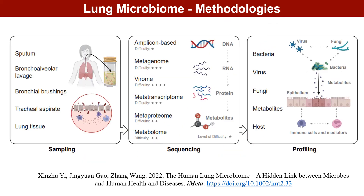Sputum, bronchoalveolar lavage, bronchoscopy brushings, and lung tissue are the routine sample types for lung microbiome studies. 16S rRNA gene and ITS-based amplicon sequencing are widely applied for characterizing the lung bacterial and fungal microbiota. To sequence the virome community, a purification and enrichment step is required to isolate the viral particles.